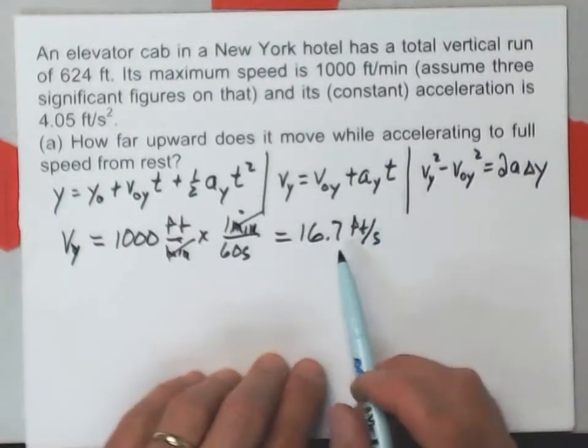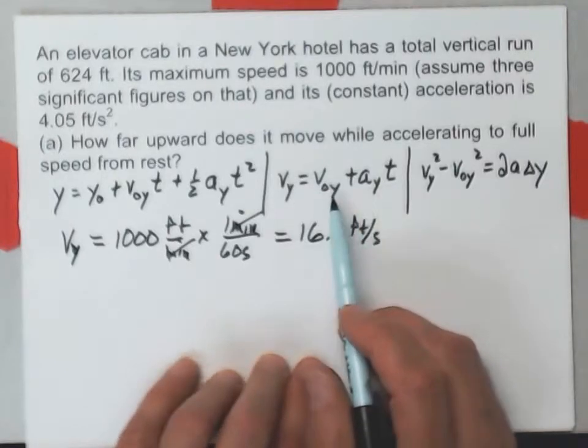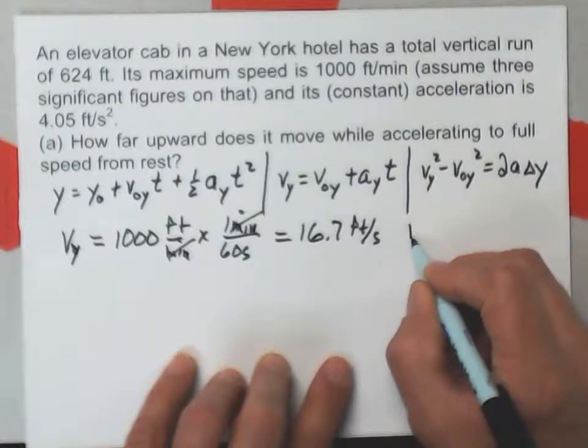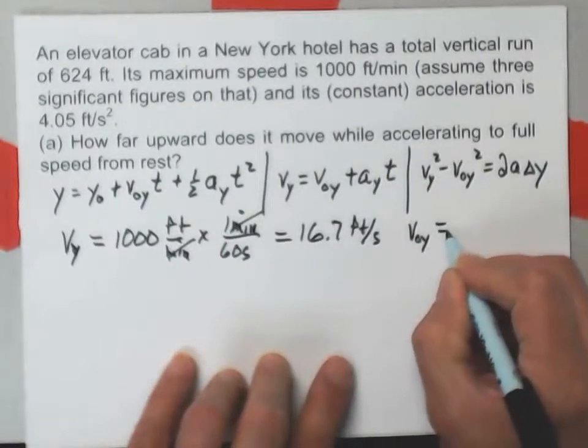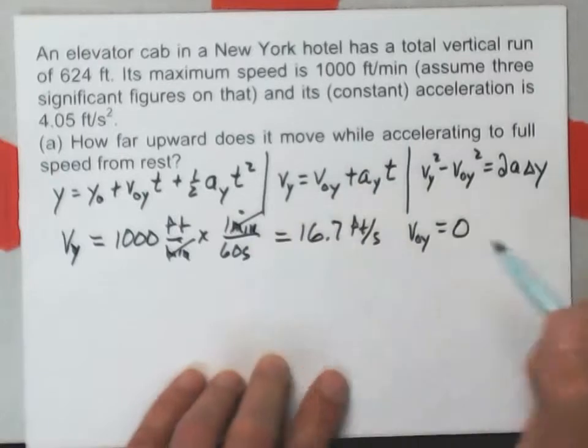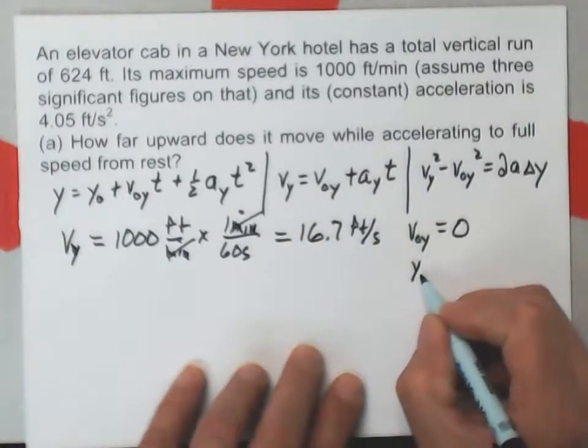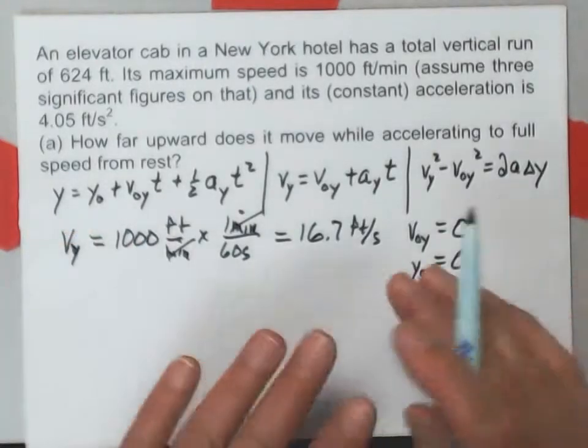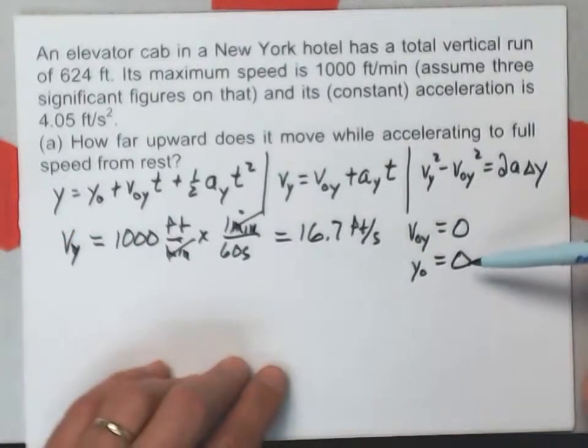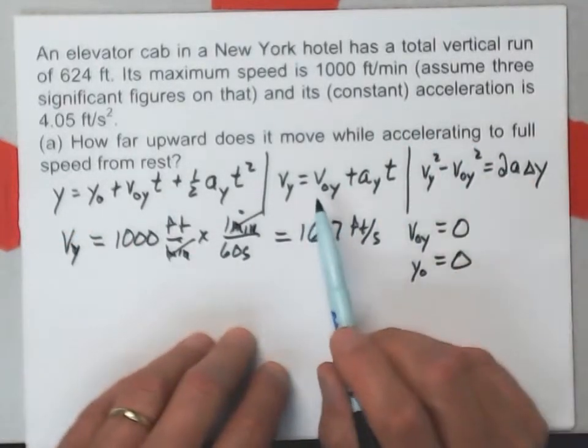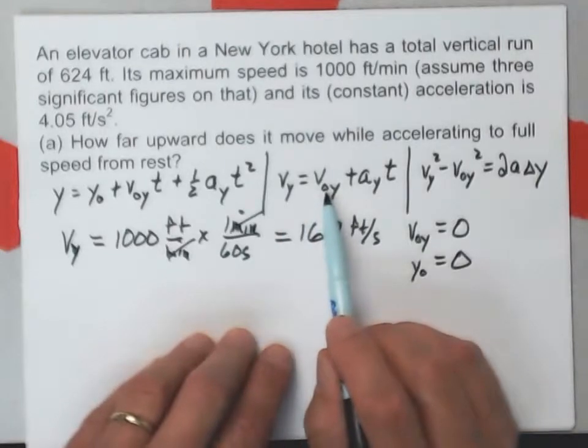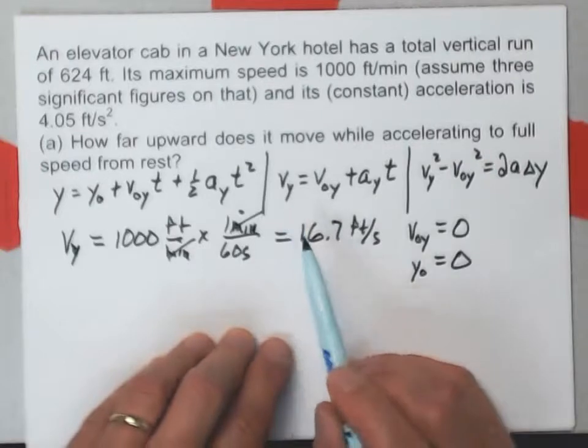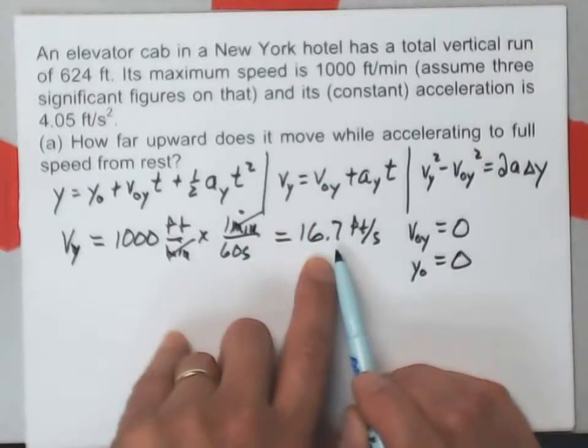Now I just want to know how far up it goes while it's accelerating to full speed. I could do this two ways. One way, because I know the acceleration, I know that it starts at rest, so v naught y is equal to 0 for part A.